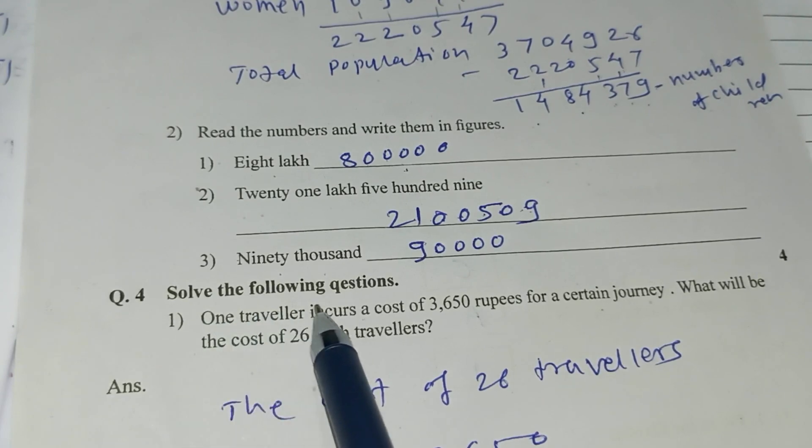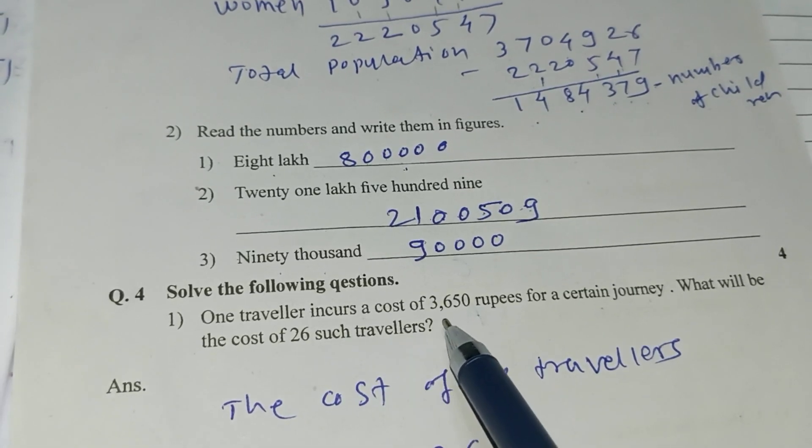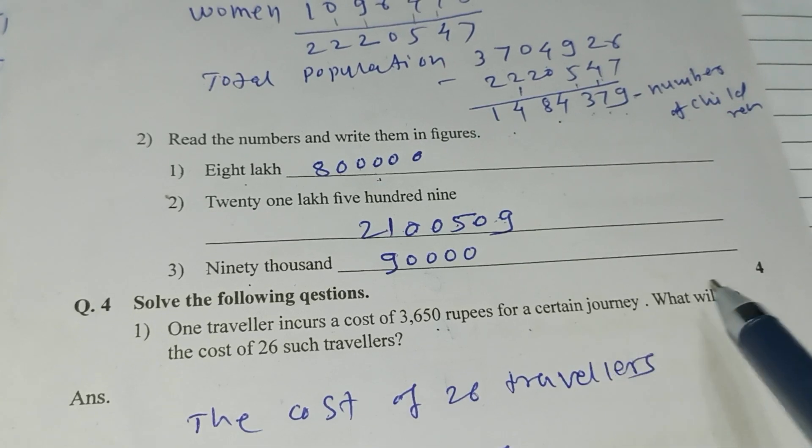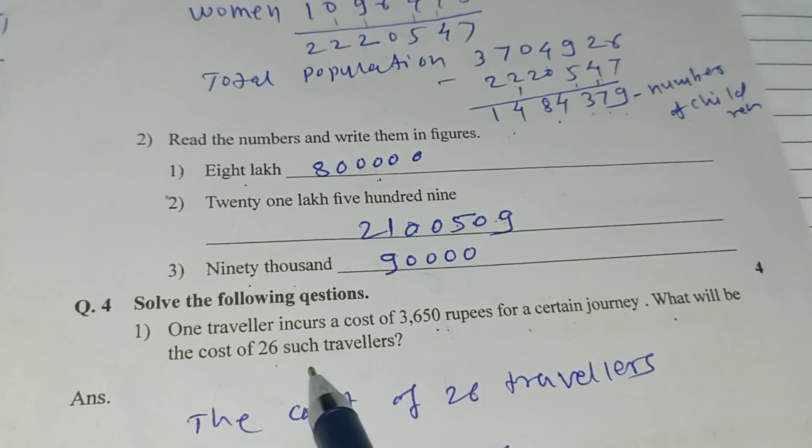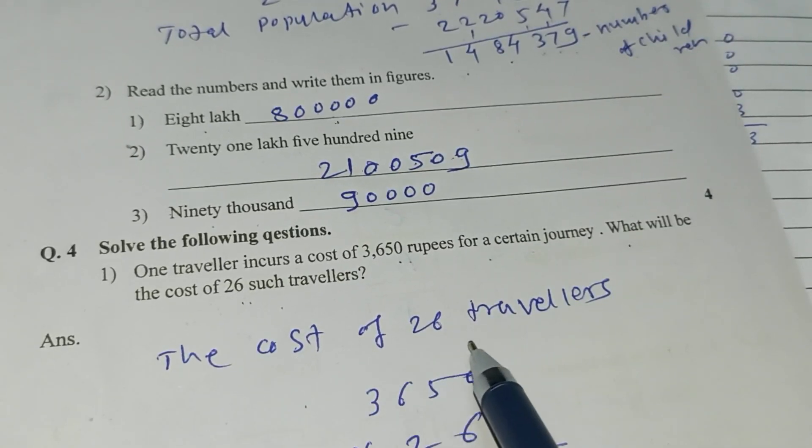Question number 4, solve the following questions. One traveler incurs a cost of 3,650 rupees for a certain journey. What will be the cost of 26 such travelers?